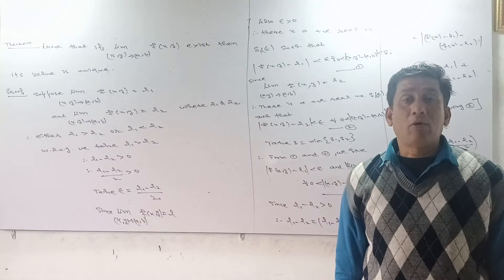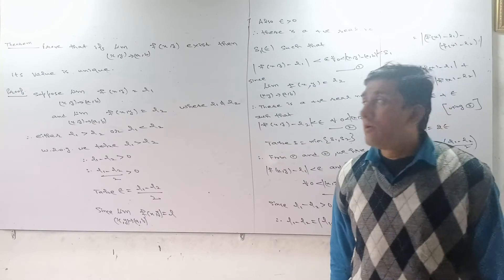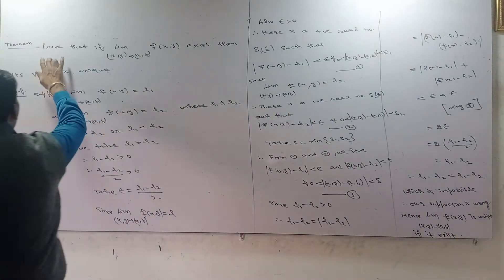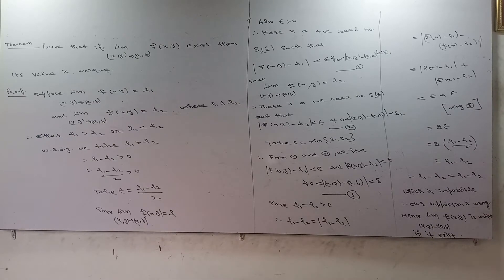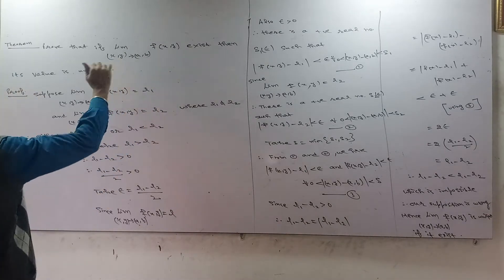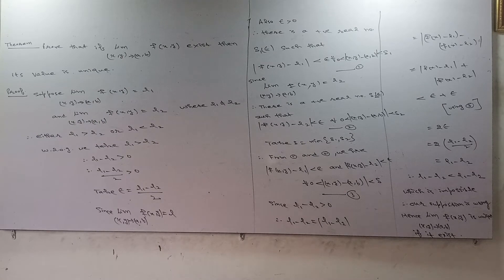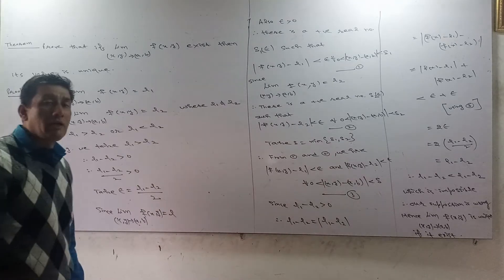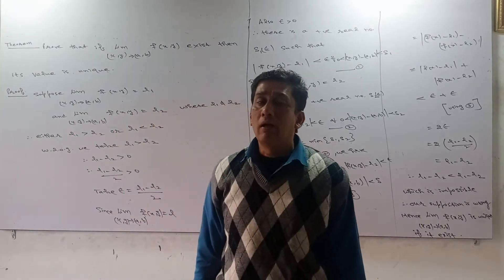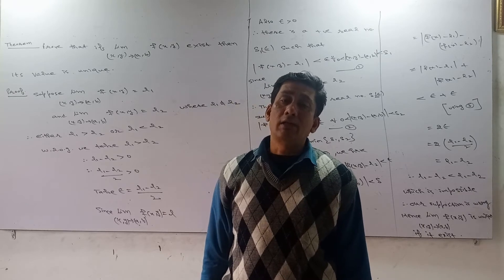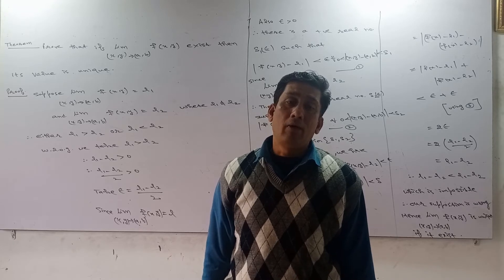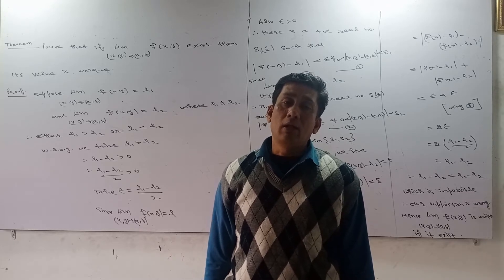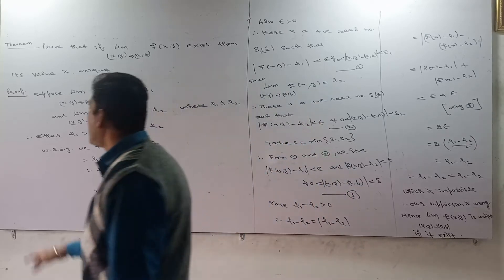Today, regarding the same topic, we have the theorem: prove that the limit of a function f of two variables x and y, when (x, y) approaches (a, b), then its value is unique. That is, if the limit of f(x, y) exists as (x, y) approaches (a, b), we show that the limit value is unique. So, prove that for students.